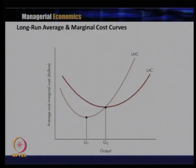When you graph the long run marginal cost curve and long run average cost curve, both costs initially decrease with the increase in output, but then increase when output rises beyond a certain point. The long run marginal cost curve always intersects the long run average cost curve at its minimum point — at that minimum point, LMC is equal to LAC.